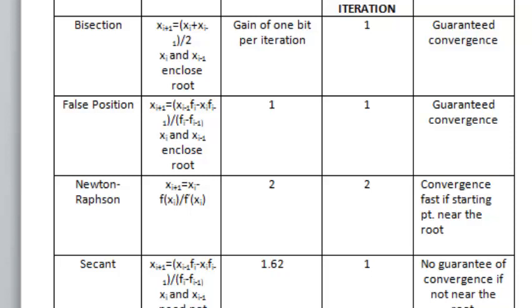For Newton-Raphson method, xi+1 equals xi minus f(xi) divided by f'(xi). For secant method,